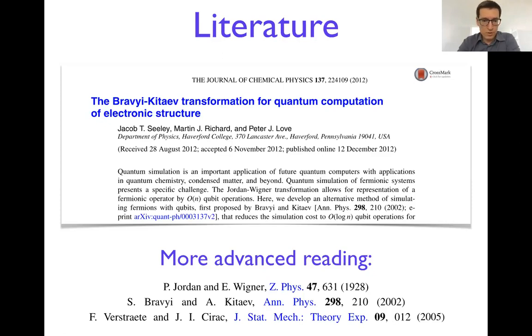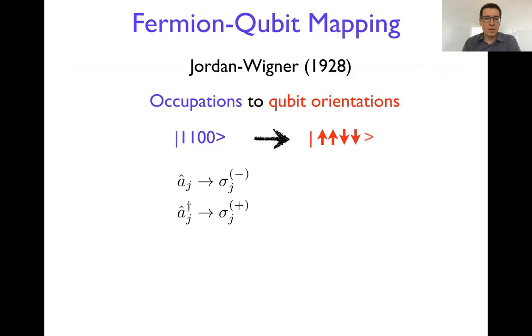If you feel more adventurous, then there is more advanced reading, the original texts by Jordan-Wigner, Bravyi and Kitaev, and also there are a few other texts related to more advanced mappings beyond Bravyi-Kitaev and Jordan-Wigner.